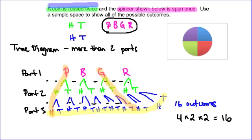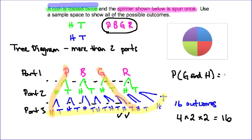If I want to find the probability of green and exactly one heads, I look at which outcomes allow that. Green-tails-tails doesn't work. Green-tails-heads works. Green-heads-heads does not work. Green-heads-tails works. So 2 out of 16 of my total outcomes are favorable, which is equal to 1/8 or 12.5%.